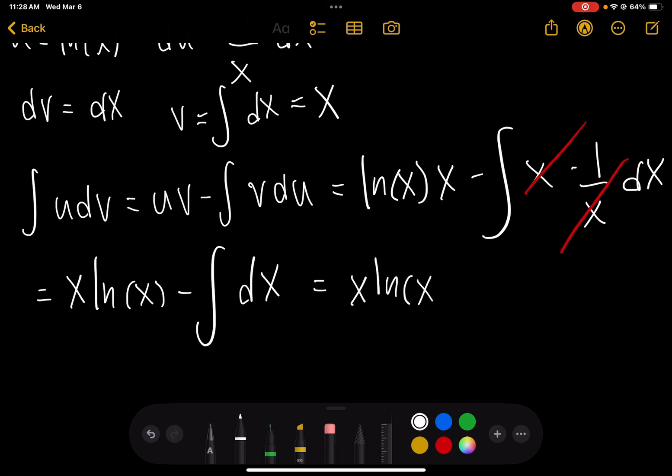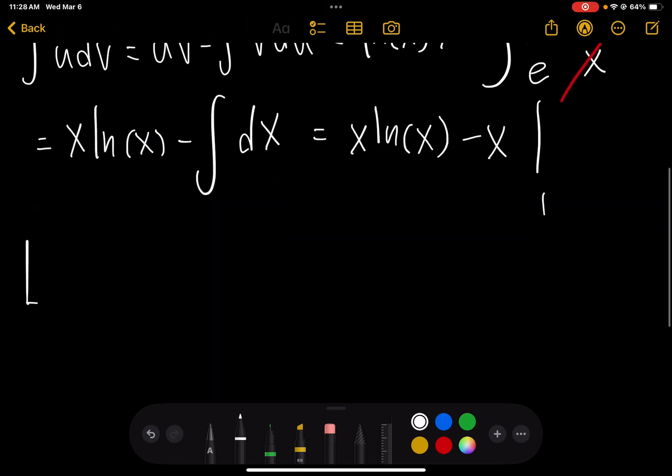x ln x, the integral of dx is just x. So now we have to evaluate from our bounds of integration, which were 1 to e.